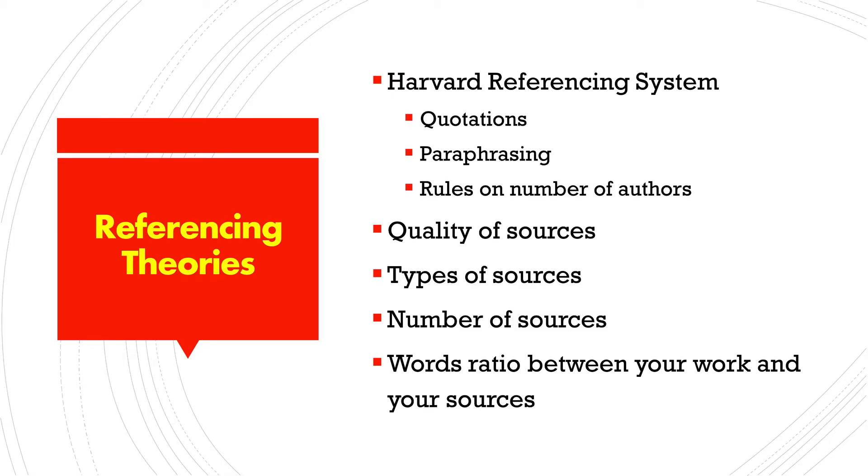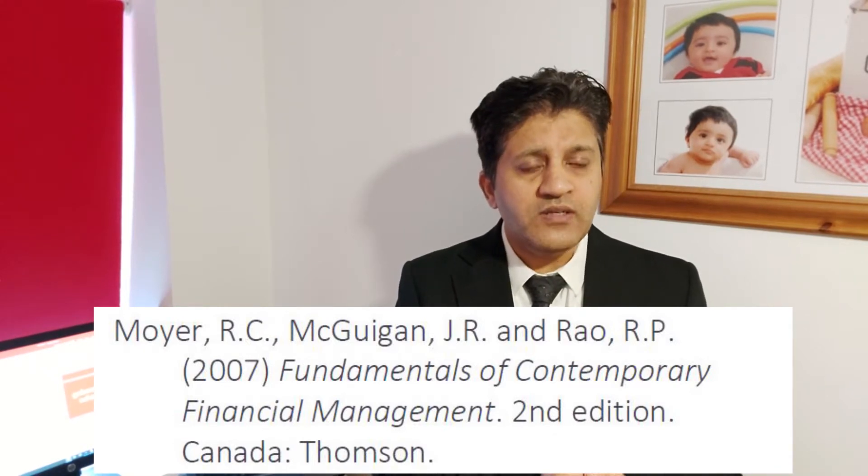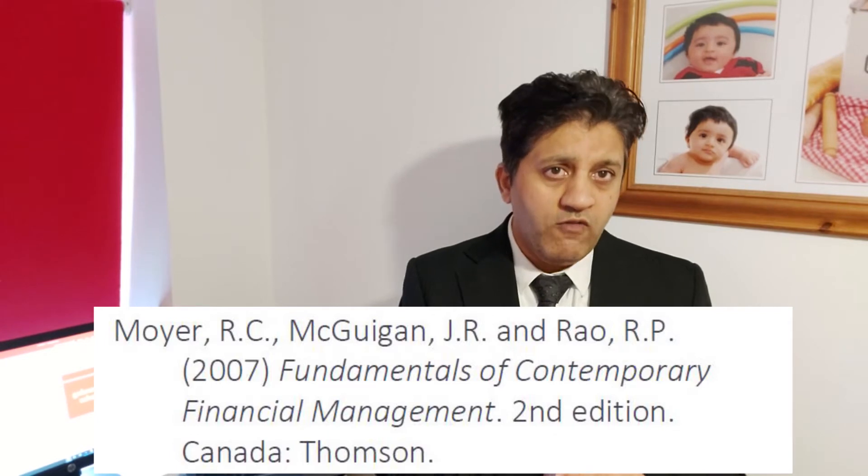Most universities in the UK recommend Harvard referencing. The main points in the Harvard referencing system are: when you quote somebody — meaning when you use exactly the same words used by an author — you need to use inverted commas, and then after the quotation you need to write down the author's name along with the year of publication. This goes in the body of the work, and then in the reference list you write down the full details of the publication, the publishers, and the year of publication.